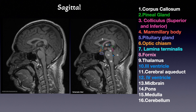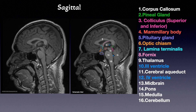Here we can see the lateral ventricles, and here we can see the third ventricle. The lateral ventricle is connected to the third ventricle with the foramen of Monro, and the third ventricle is connected to the fourth ventricle with the help of the cerebral aqueduct — or what we call the aqueduct of Sylvius. It will go down and connect to the space that covers the spinal cord. We know that all these ventricles and the brain are surrounded with cerebrospinal fluid. And these structures we can see here: the midbrain, pons, medulla, and cerebellum.